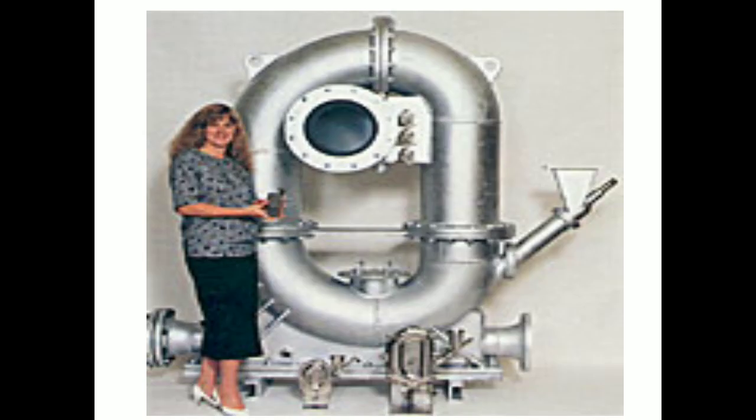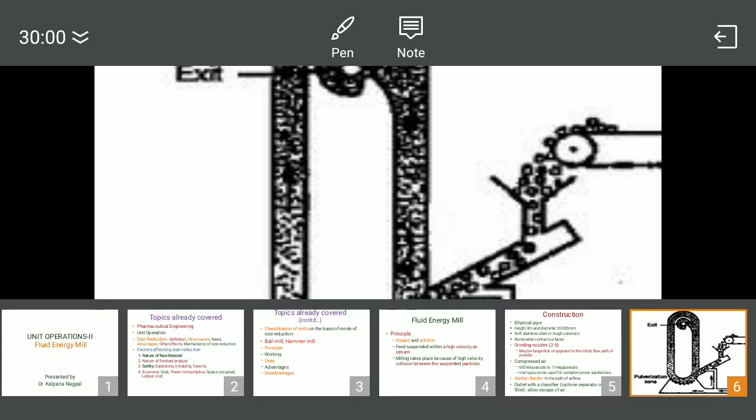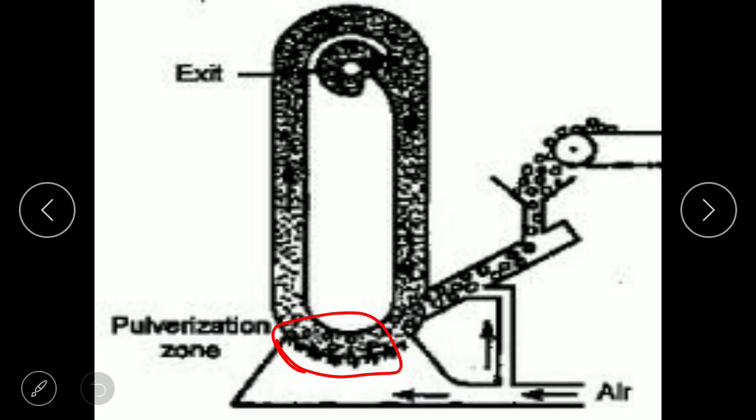The basic construction: it has an elliptical pipe, the height is approximately two meters, and the diameter ranges from 20 to 200 millimeters. The material it is made of is either soft stainless steel or tough ceramics. It has removable contact surfaces. The grinding nozzles vary from two to six in number and may be tangential or opposed to the initial path of flow of the powder. These are the grinding nozzles.